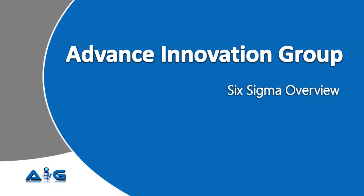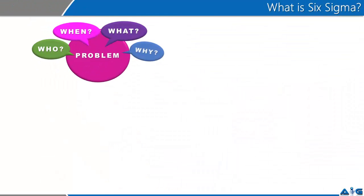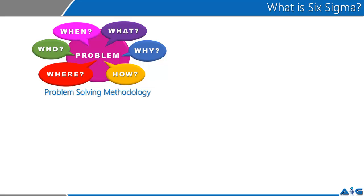I assume that you already understand that Six Sigma started a lot of years ago with Motorola, essentially as a post-motive approach where Six Sigma was considered to be a problem-solving methodology where you needed to answer the hows and the whens and the whats of your answer. You essentially were looking at y as a function of x.